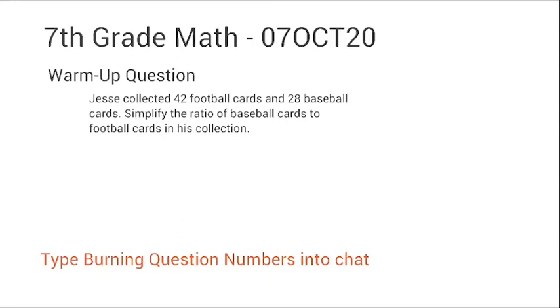Okay, the warm-up question tells us that Jesse has two different kinds of cards: he has football cards and he has baseball cards. So those are the two pieces of information I have, and I've got to figure out what they want me to do. They want me to simplify a ratio.